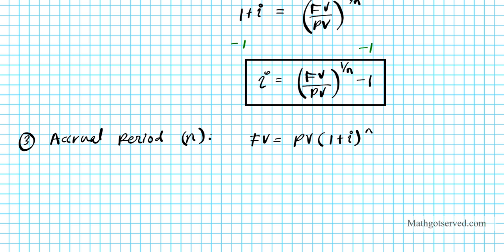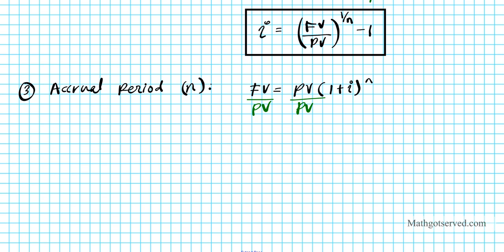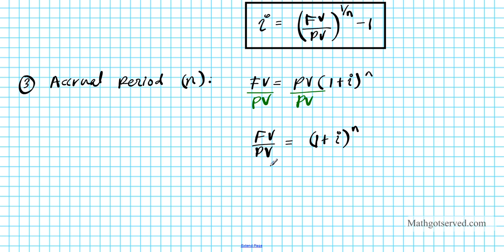First, divide both sides by the present value, so we have: future value over present value equals 1 plus i to the nth power. Now I need to bring down this exponent. I'm going to use the power property of logarithms. To use that, I first introduce the common logarithm to both sides of the equation. I'll take the common log of FV over PV equals the common log of 1 plus i raised to the nth power.